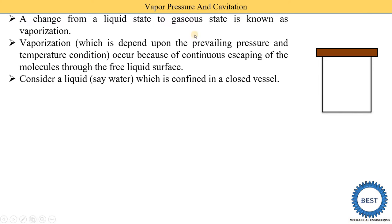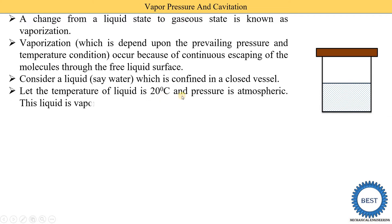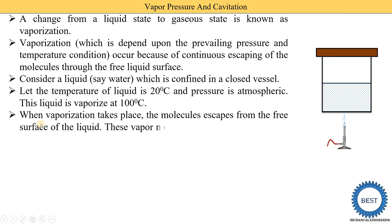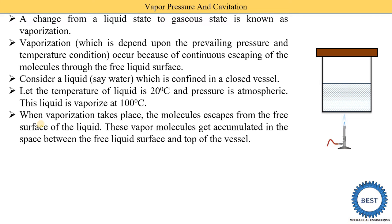Consider a liquid — water — which is confined in a closed vessel. In this closed vessel we fill the water. The temperature of the liquid is 20 degrees Celsius and the pressure is atmospheric pressure. This liquid vaporizes at 100 degrees Celsius. When we supply heat energy to the water, vaporization takes place and molecules escape from the free surface of the liquid.